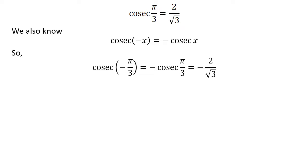So, cosecant of minus pi upon 3 equals minus cosecant of pi upon 3, which equals minus 2 upon square root of 3.